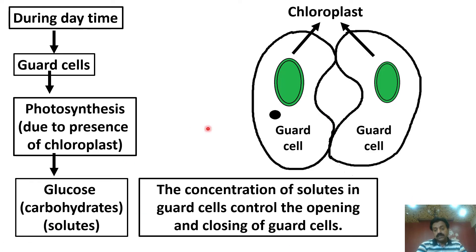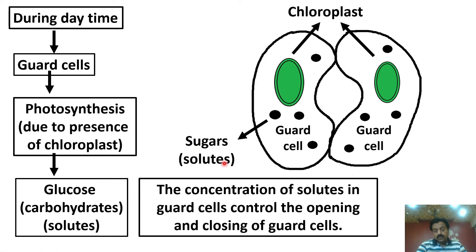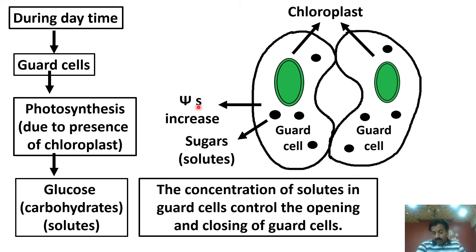As solutes increase inside guard cells, the solute potential (ψs) increases. Dear students, when ψs increases, the water potential (ψw) decreases inside the guard cells. When the ψw of guard cells decreases, the neighboring cells have a higher ψw. Since water always moves from higher water potential to lower water potential, the neighboring cells will lose water and the guard cells will gain water.